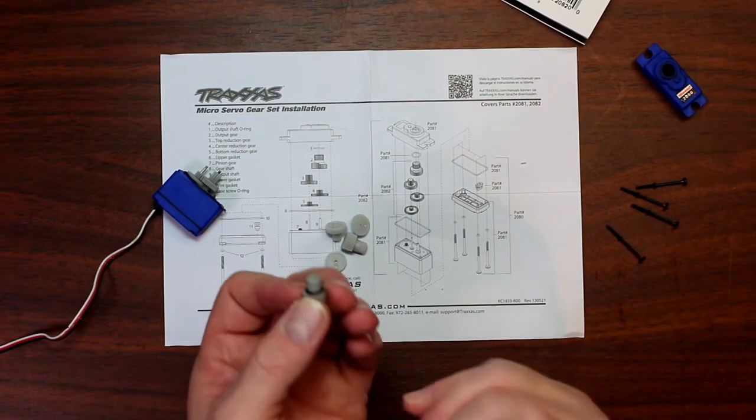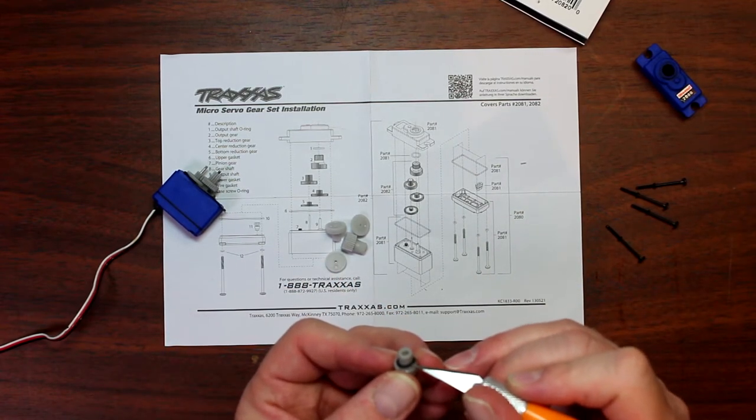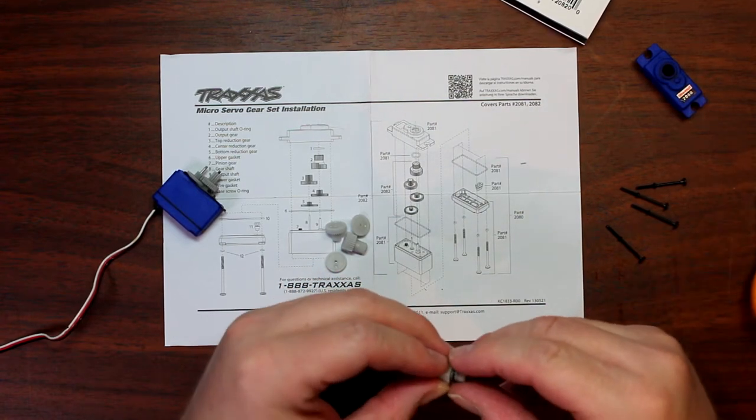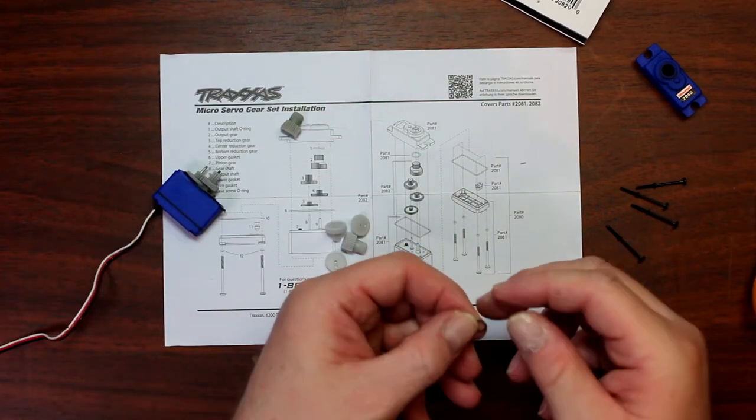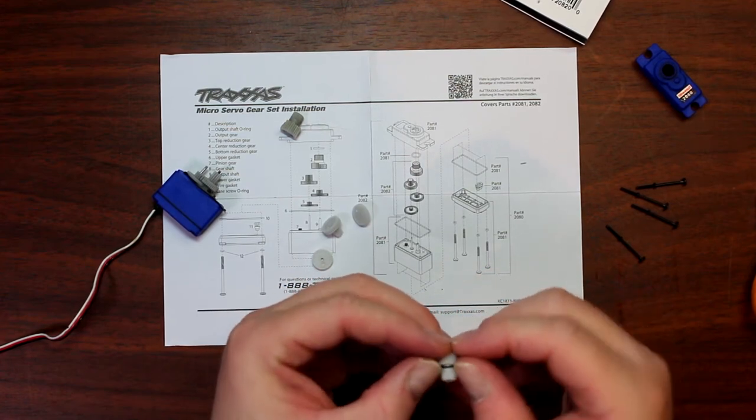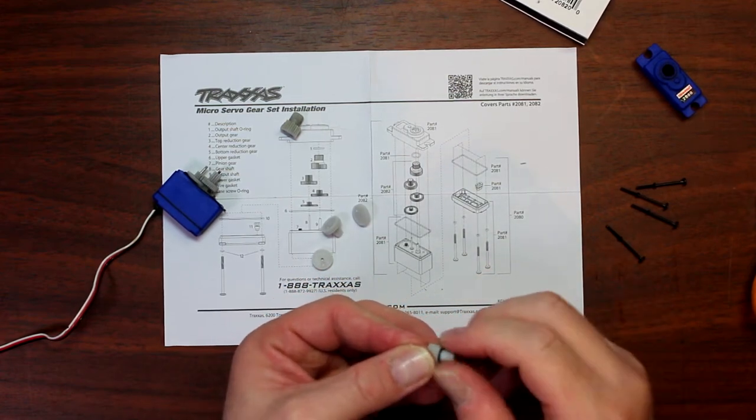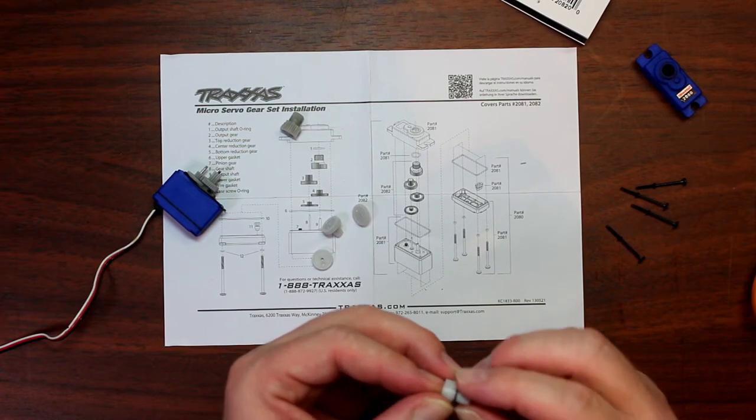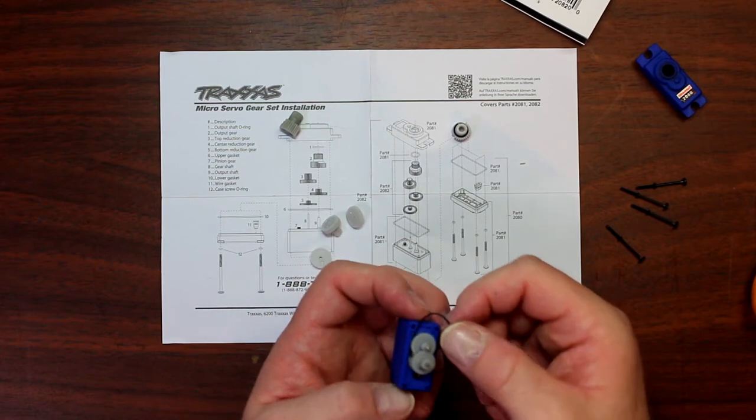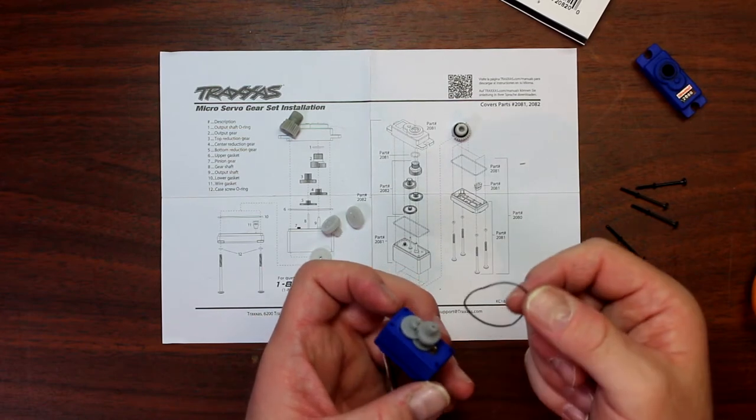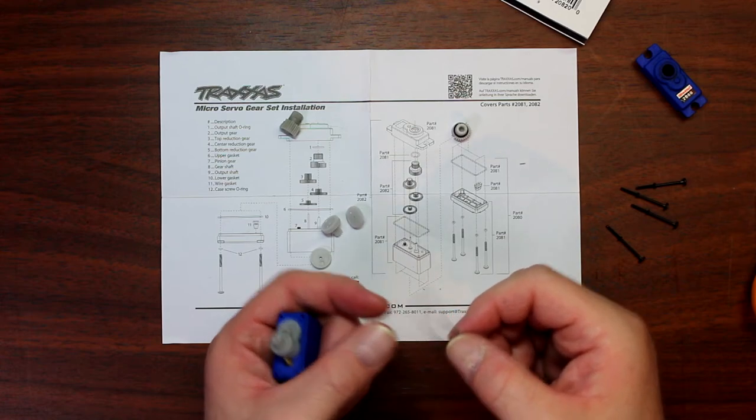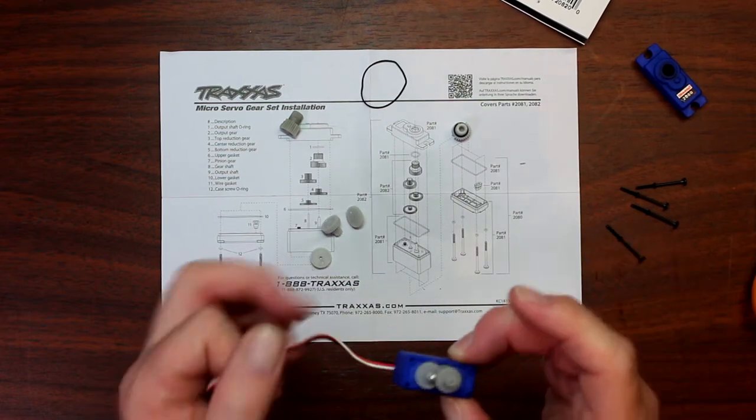Now we just need to remove the o-ring that's right here. That's not supplied in the kit. Put it on top of this one and make sure it's seated. There is a gasket that goes around the servo completely. Put it aside, we'll come back and put it on after.